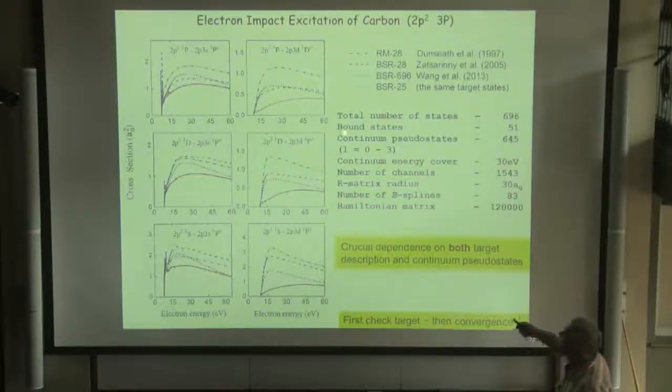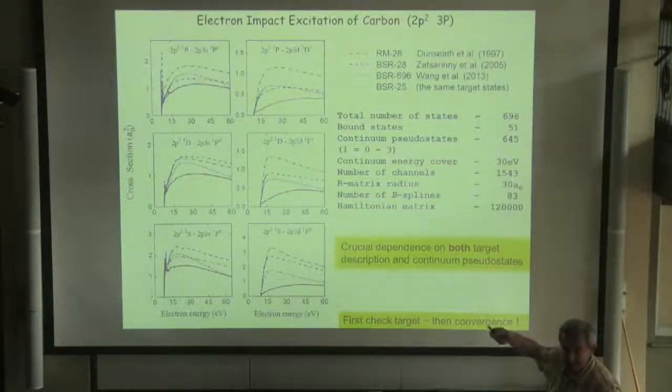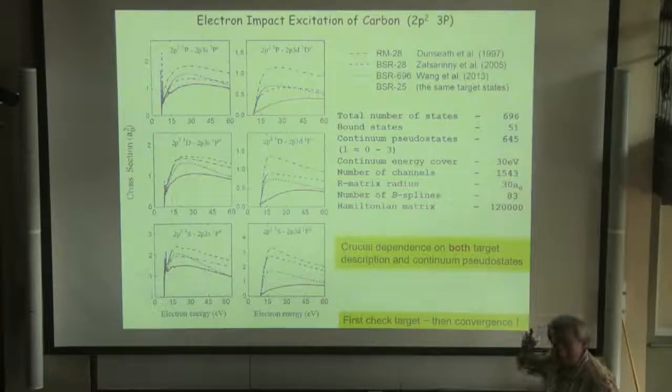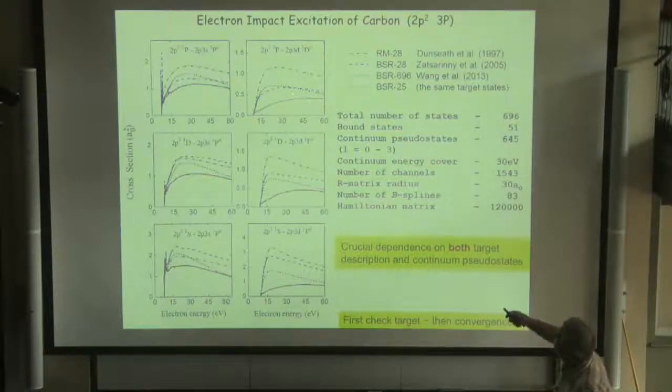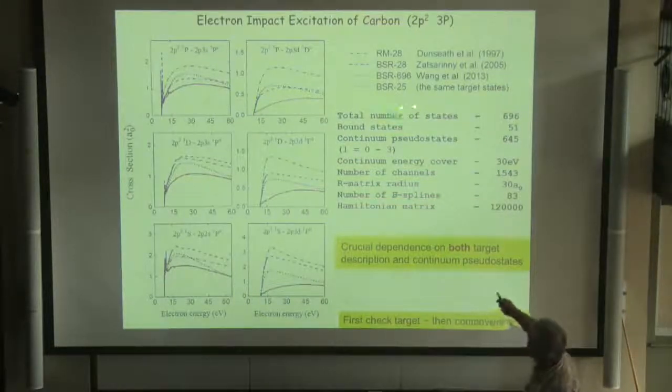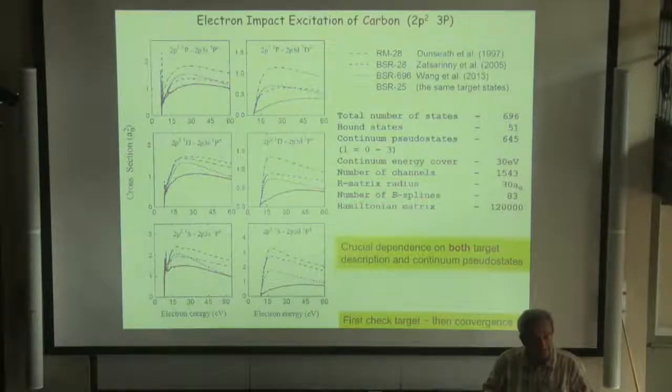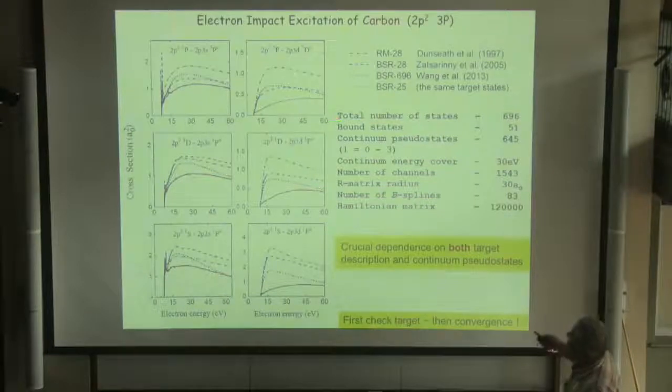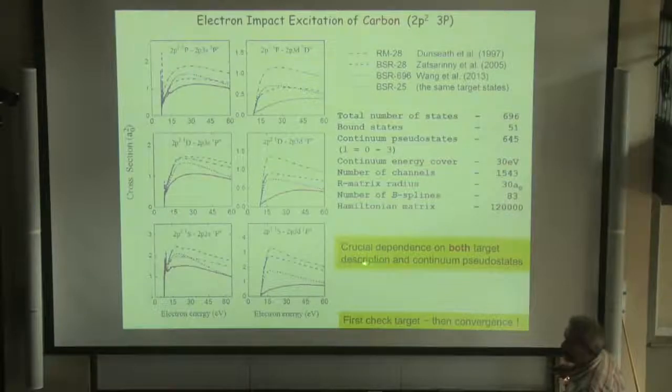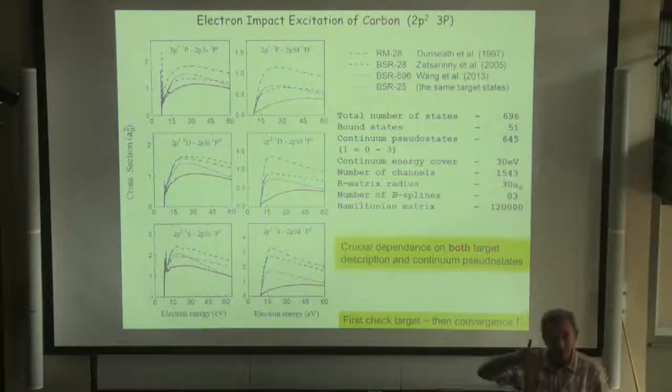Here, influence of continuum pseudo-states you can look - compare with red lines. But influence of accuracy of target states, compare with results with blue and red lines. In this last calculation, we used much more big expansion for target states, much more accurate target states. And you see that both here, cross-section depends very much from both targets and continuum - both influence very much.